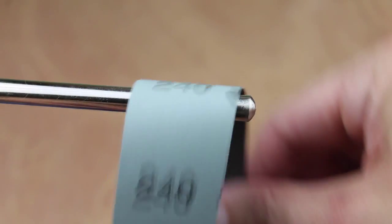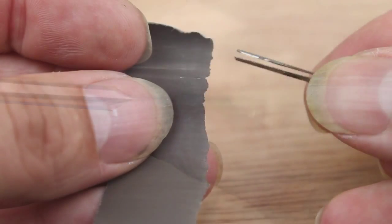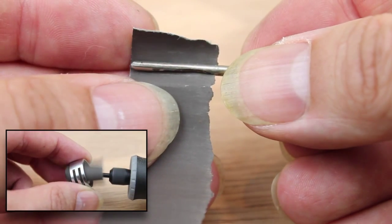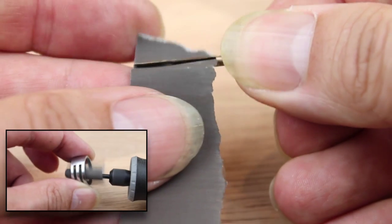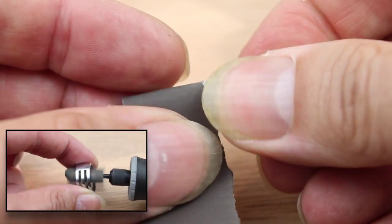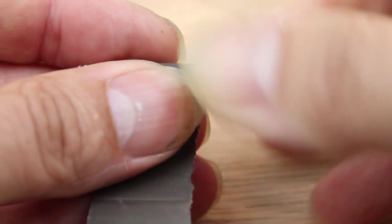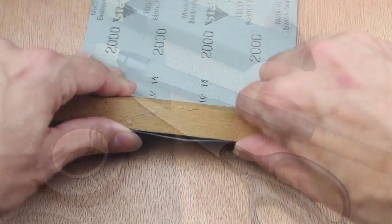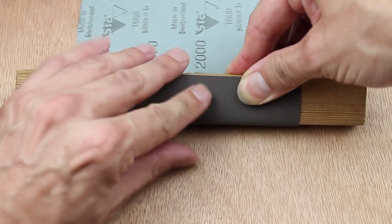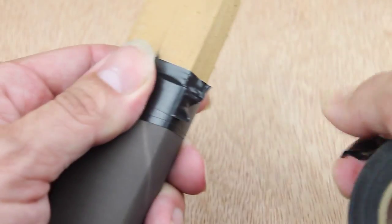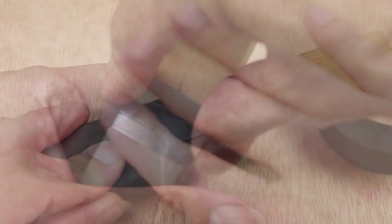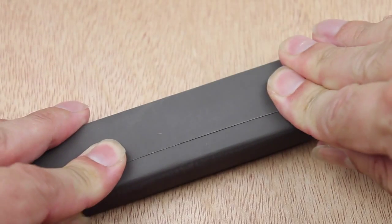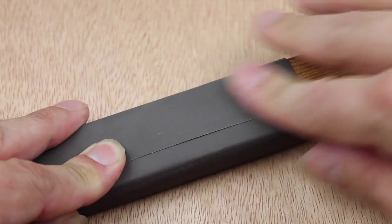You can also use a split mandrel in your flex shaft or your Dremel for the inside of rings. Just remember to wind it forwards when wrapping it around the mandrel. You can also make buff sticks - just wrap a sheet of emery paper nice and tightly around a small stick, and then wrap some tape around each end. You might find it helps to crease the paper first to get nice crisp edges.